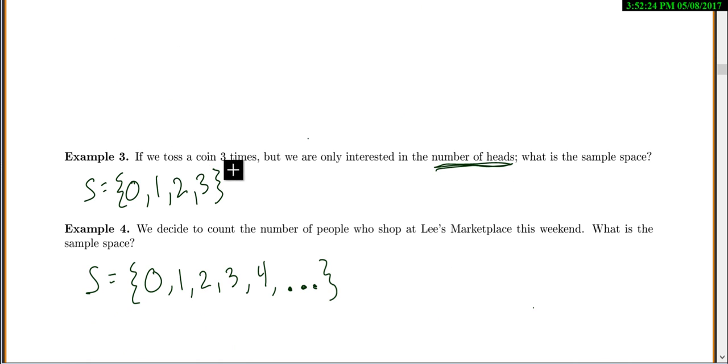Now if we were to toss a coin three times, but we are only interested in the number of heads, what would the sample space be? I don't actually care what the specific outcomes were, I only care about the number of heads. So I could get zero heads, one, two, or three heads.